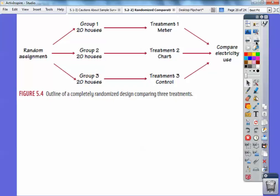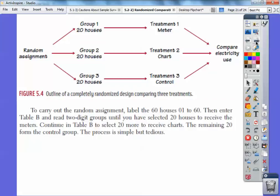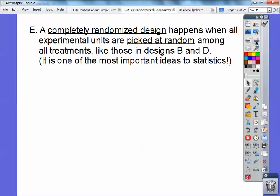And so here's the outline right here. So randomly assign, group one can get the meter, group two can get the chart, and then group three has no help at all. And then we just randomly assign. So to carry out the random assignment, label the 60 houses, 01 to 60. Then you can enter table B and read the two-digit groups until you have selected 20 houses to receive the meter. And then continue in table B to select 20 more to receive the charts. And the remaining 20 will form the control group. And this process is simple, but it can be tedious. But we'll just think of some faster ways later.